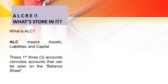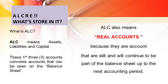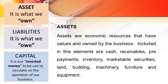ALC means asset, liabilities, and capital. These first three accounts are accounts that can be seen on the balance sheet. ALC also means real accounts because they are accounts that are still and will continue to be part of the balance sheet up to the next accounting period.